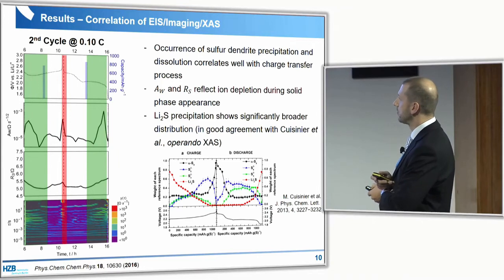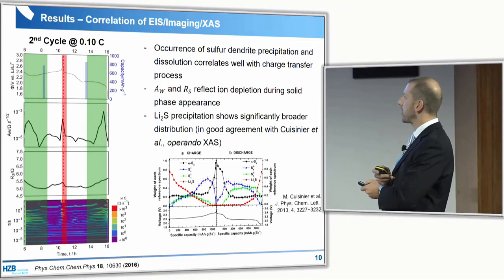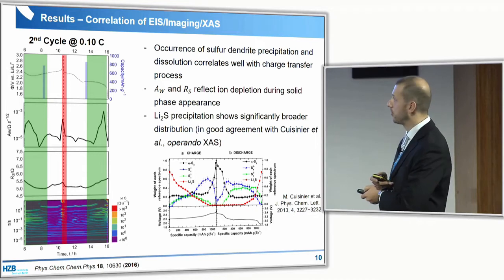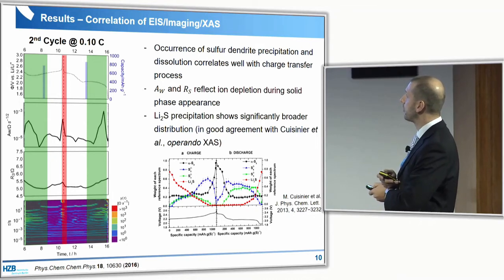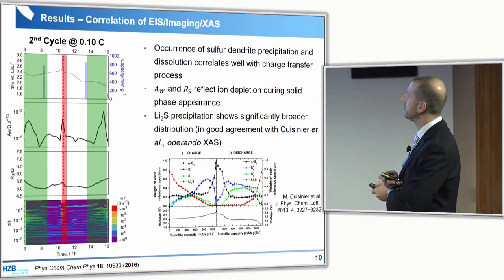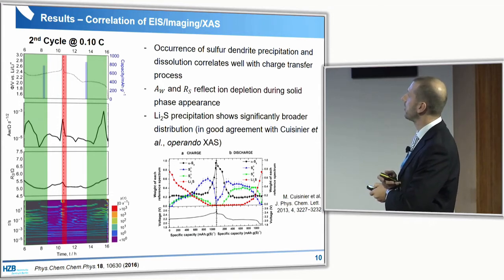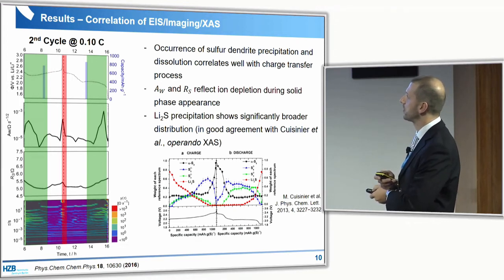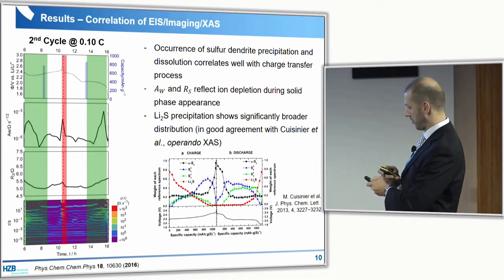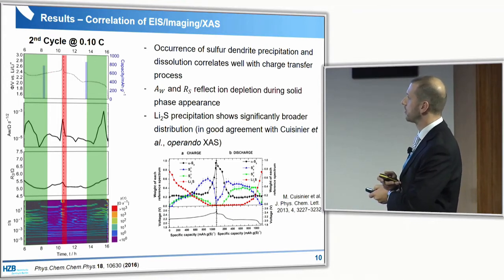This is in full agreement with X-ray absorption spectroscopy, which was also done in operando mode by Küsne et al. You can see the occurrence of the sulfur dendrite precipitation and dissolution is very well correlated to this area of the red shading here. The Warburg impedance and solution resistance reflect ion depletion during the solid phase appearance, and the Li₂S precipitation is in good agreement — so we can say this is the charge transfer connected to this process.